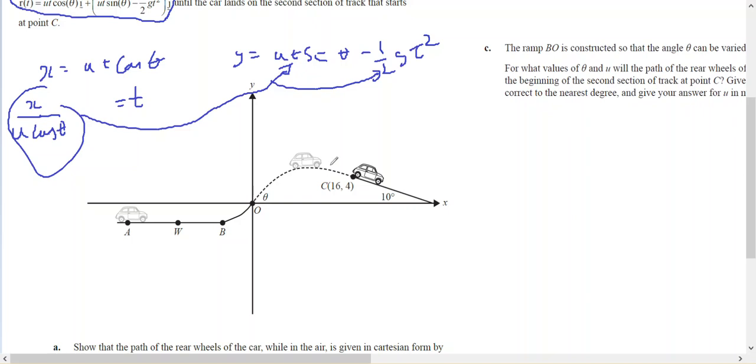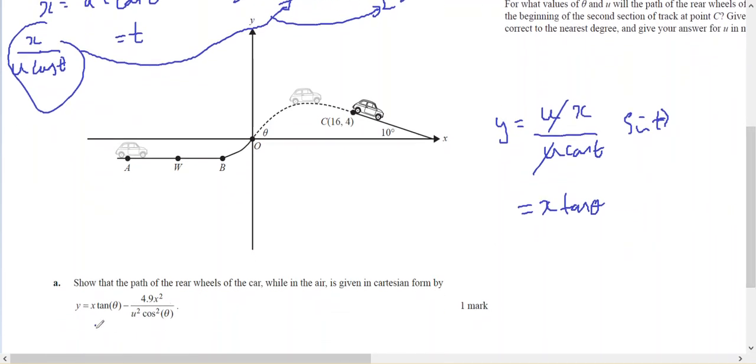So that's going to give me y equals u times x on top of u cos theta times sine theta. And the u's cancel, and sine theta on cos theta is x tan theta. And I like that first bit.